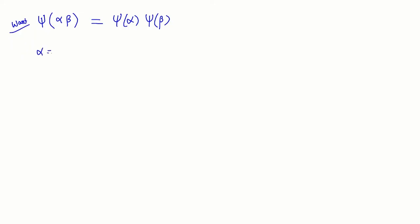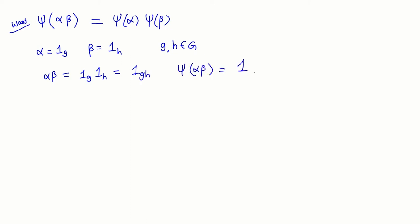Let us check this on the basis elements. Take α = 1_G, β = 1_H for fixed elements G and H from G. When I compute ψ(αβ): first αβ = 1_G · 1_H = 1_{GH}, and therefore ψ(1_{GH}) = 1_{(GH)^{-1}}. On the other hand, let us compute ψ(α) · ψ(β), remembering we are doing this multiplication inside KG^op.